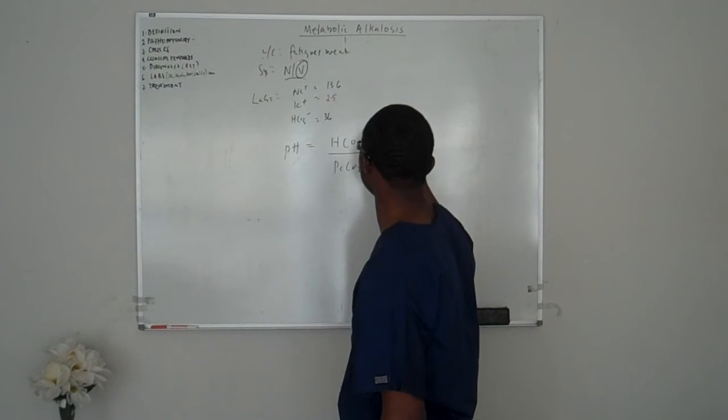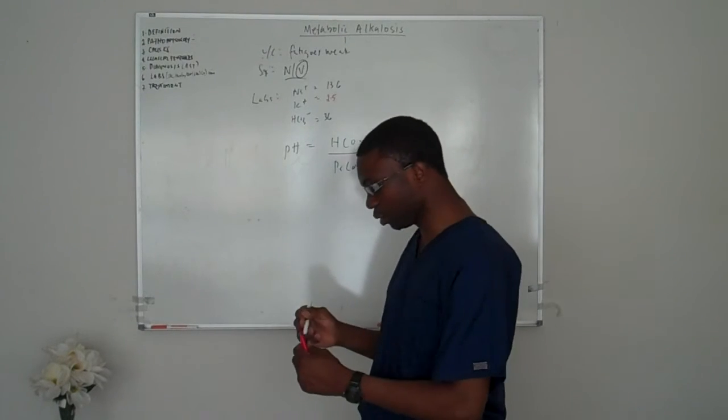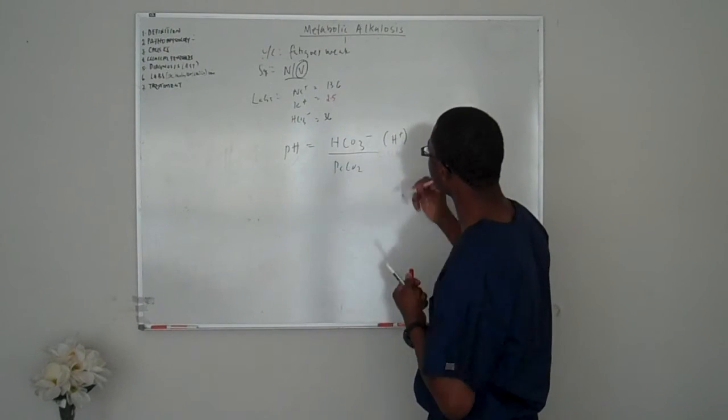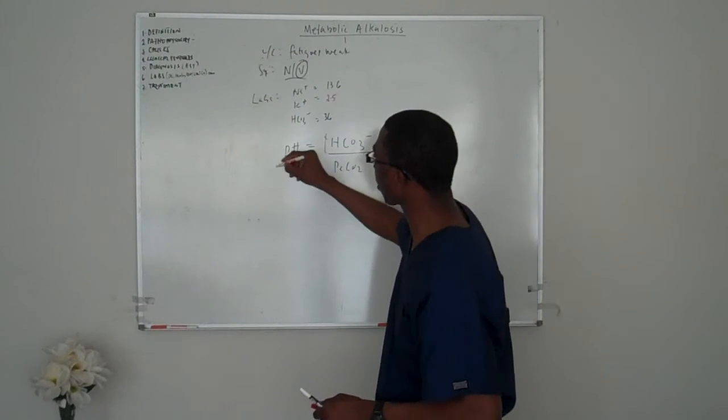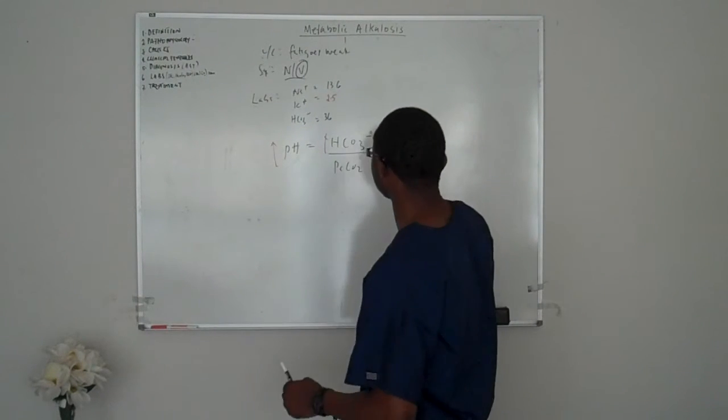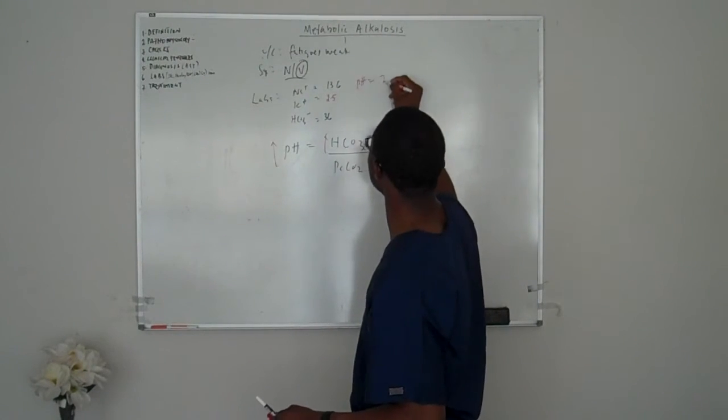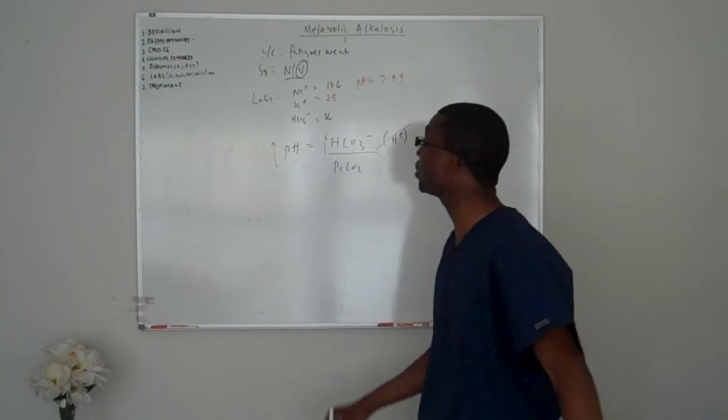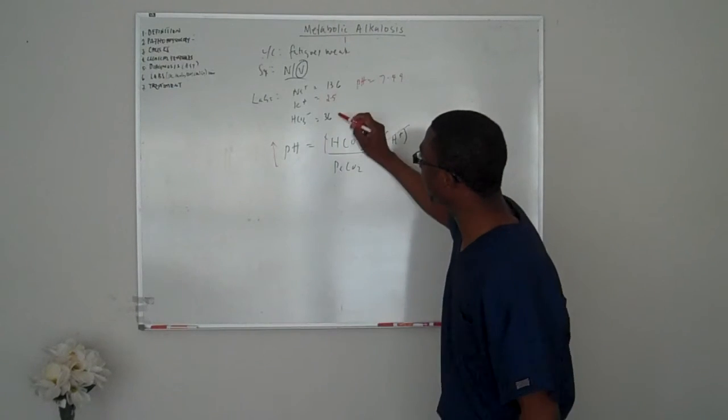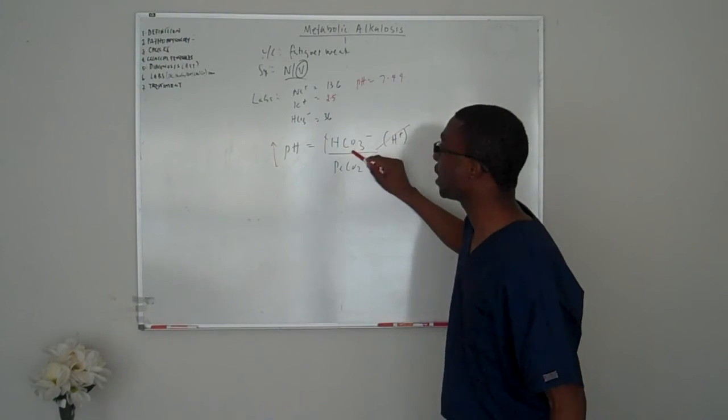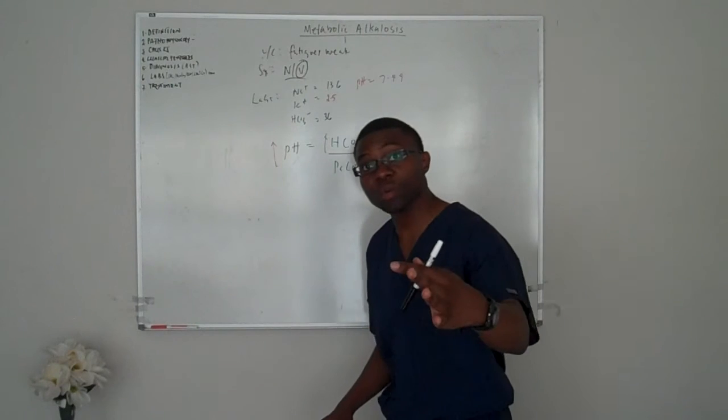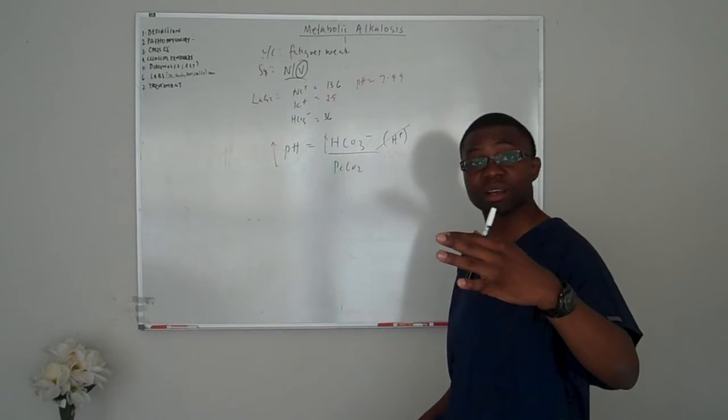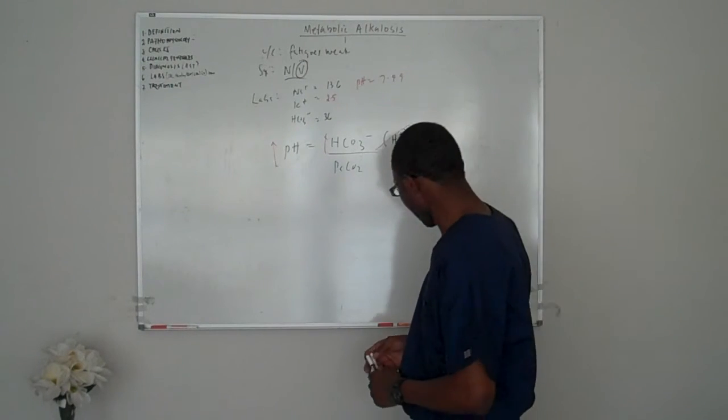Just real quick in our head. They've been losing all these hydrogen ions. They're retaining so much bicarb. Their pH, which I forgot, was 7.49. So automatically we know the patient is alkalotic. The primary problem is right on top. The only way the body is going to actually compensate is by going to respiratory route.